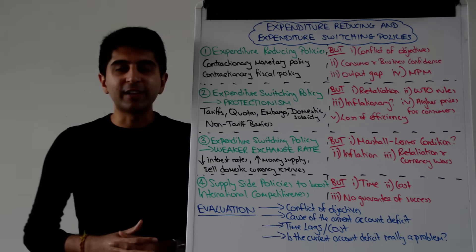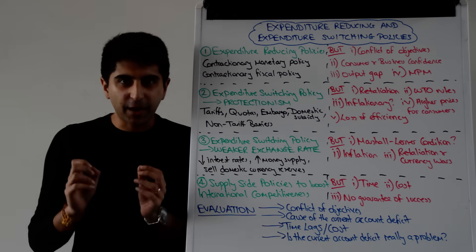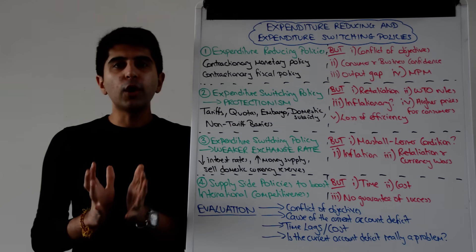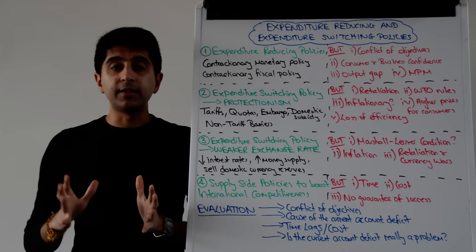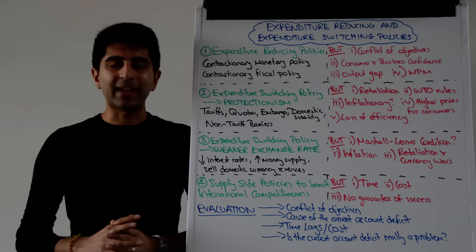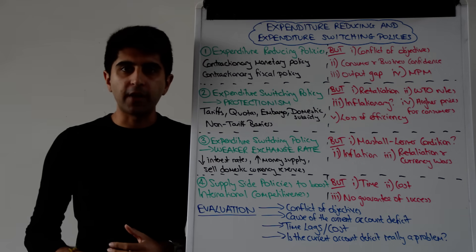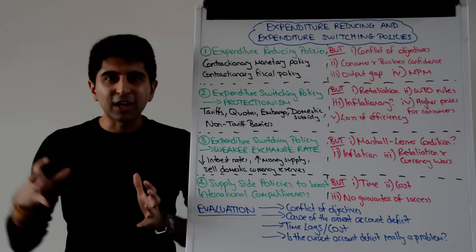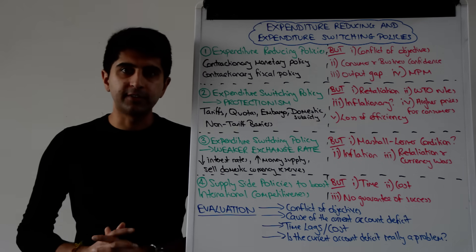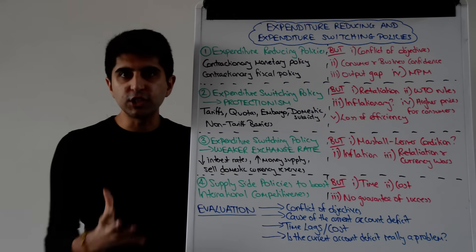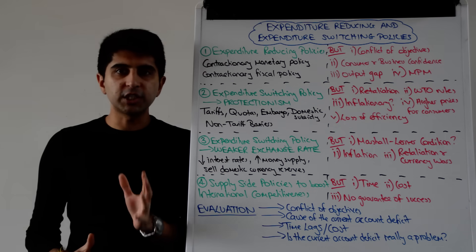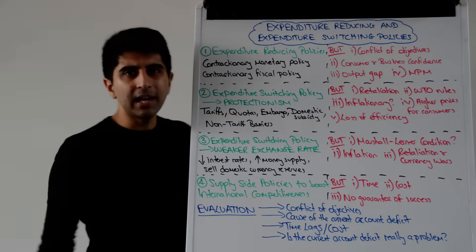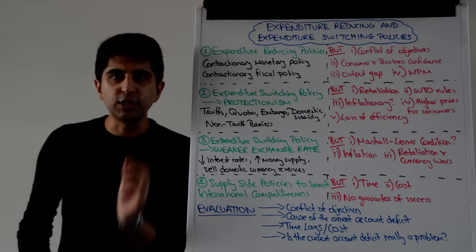Hi everybody. So there is a large current account deficit that is a big issue in an economy. We know that governments have objectives to keep balanced trade, that is not to have large current account deficits. What are the policies available to governments to close that current account deficit? We are going to look at expenditure reducing and expenditure switching policies in this video to rectify a current account deficit.